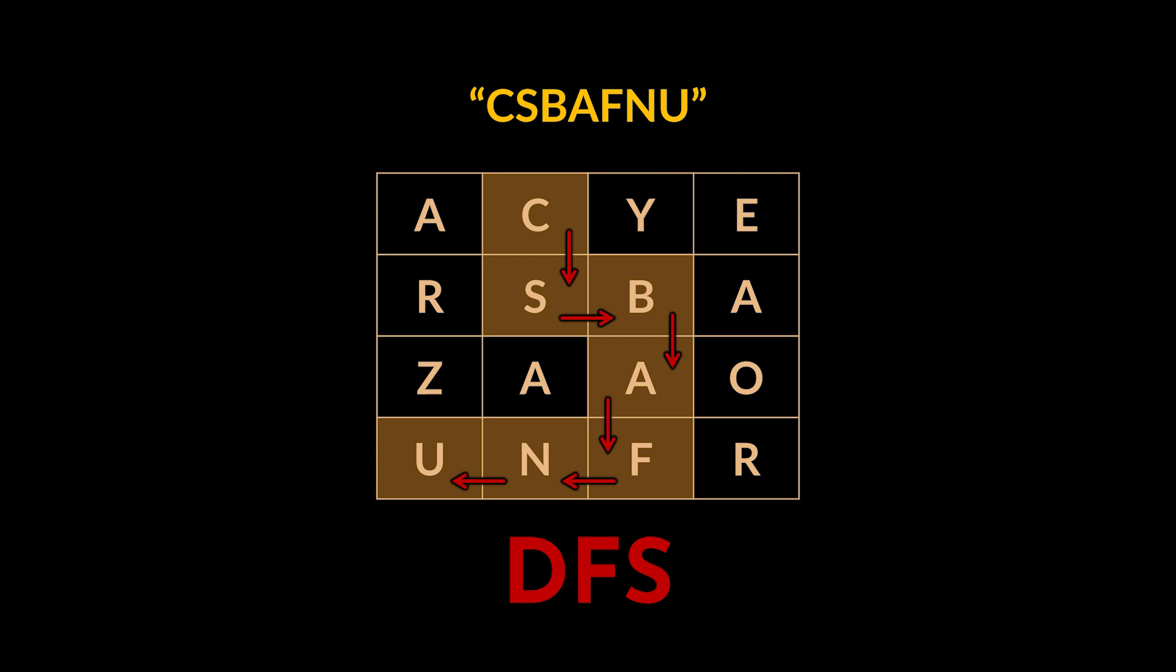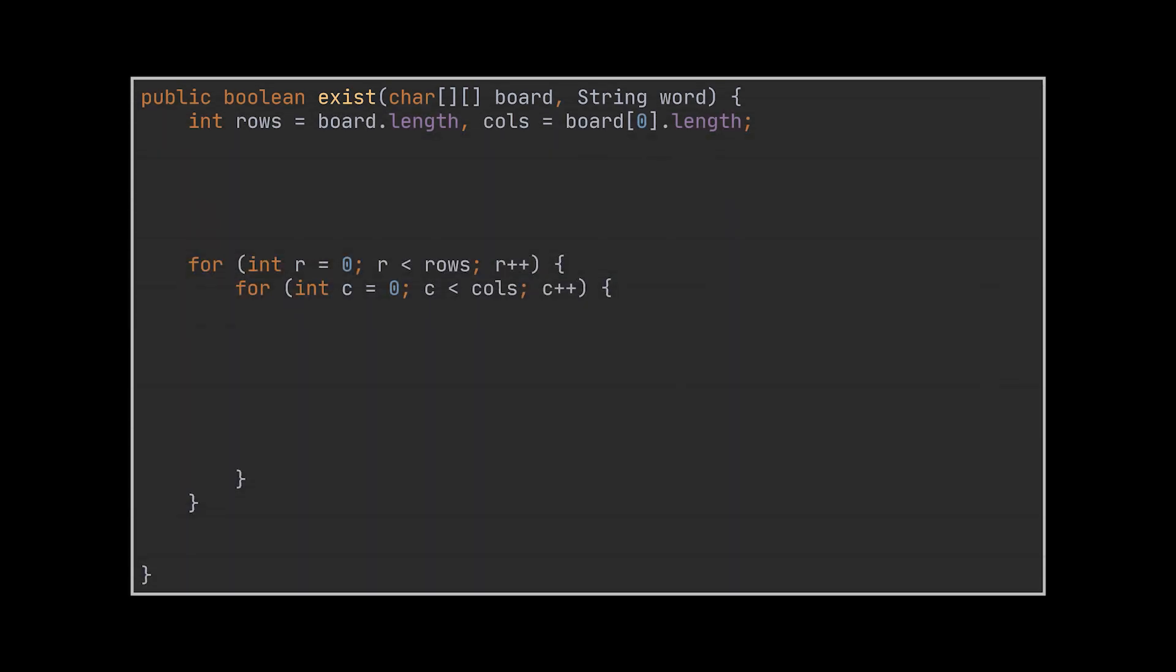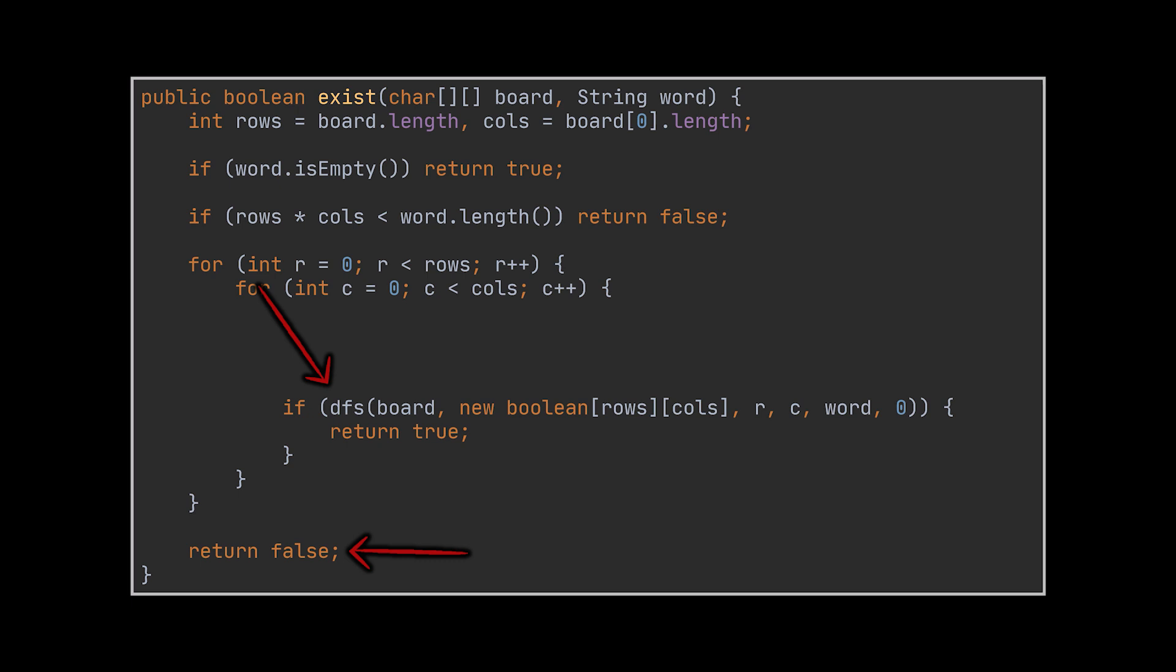To implement this solution we will need to loop over every single cell in the 2D matrix of course after adding a couple of basic preliminary checks. Now for each cell we will launch a DFS traversal starting from that character, and if the word was found we return true, otherwise we return false.